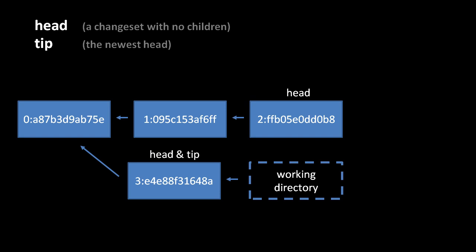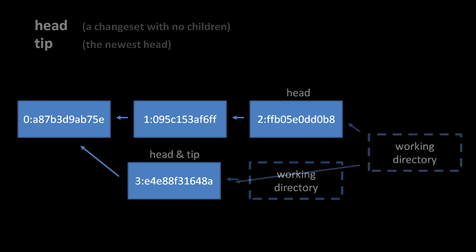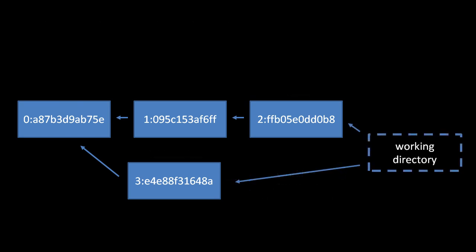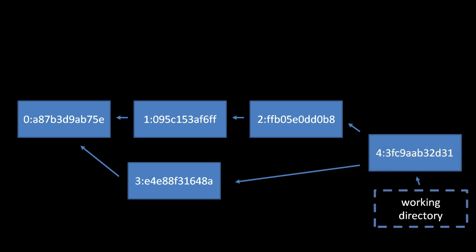Before this last commit, the repo only had one head, revision two, which also was the tip because it was the only head. When it comes time to merge two branches, we update the working directory to have two parents, not just one. We then merge these two versions together and commit the merge as a new change set with those two parents, and the working directory is updated so the new change set is its single parent.